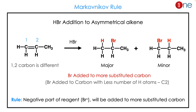What is Markovnikov's rule? It is an HBr addition to an asymmetrical alkene. When you are adding HBr to an asymmetric carbon system, the alkene has two different carbon atoms. The rule states that Br is added to the more substituted carbon, or simply, Br is added to the carbon with the fewer number of hydrogen atoms.